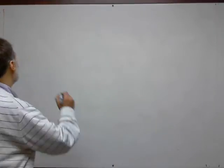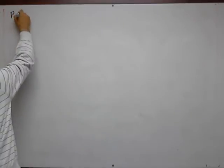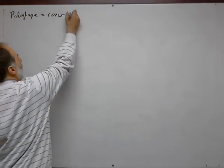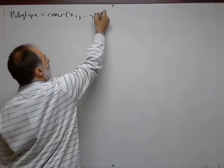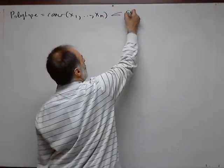All our polytopes in these lectures will be assumed to be convex. A polytope means the convex hull of finitely many points in a Euclidean space.